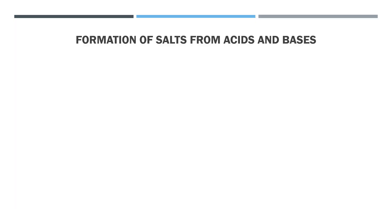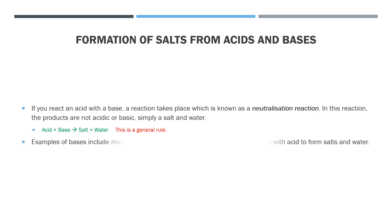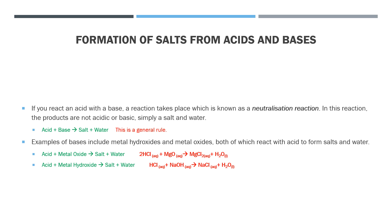Acids and bases react to form a salt. This is known as a neutralisation reaction, as the acidic conditions and the basic conditions come together to form water, which is neutral. The other product of this reaction is what is known as a salt — formed from the negative ion of an acid combined with the positive ion of a base. The general rule is: acid plus base makes salt plus water. Both metal hydroxides and metal oxides react with acids to form salts. For example, hydrochloric acid reacts with sodium hydroxide to form sodium chloride and water — that's right, table salt!